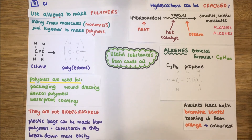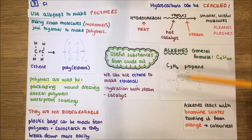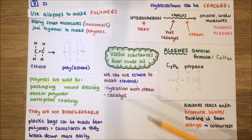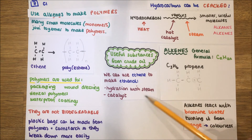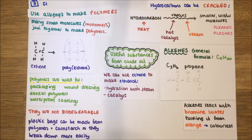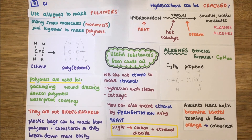The last part from the specification is that we can use ethene — an alkene — to make ethanol, a type of alcohol. The way we do that is by adding water: we hydrate it with steam. Just as hydrating yourself means drinking water, we hydrate ethene with steam to make ethanol. We also use a catalyst to speed up that reaction, though remember a catalyst does not get used up itself.